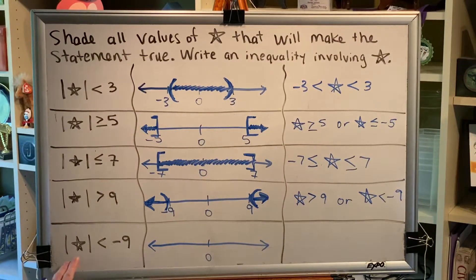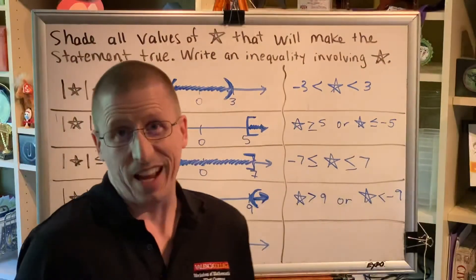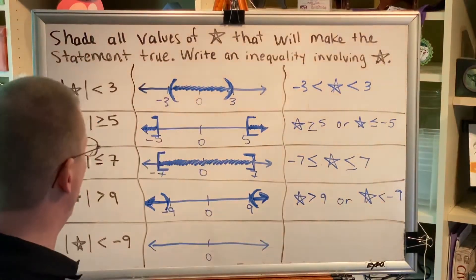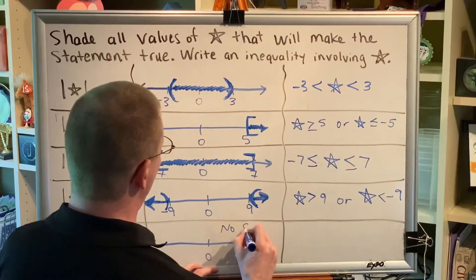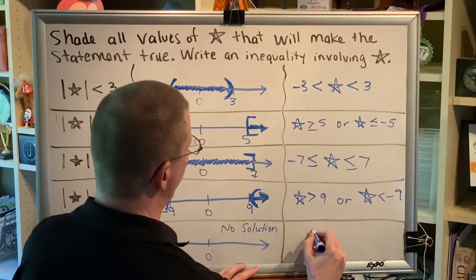The last one was the tricky one. Distance less than a negative. Well, if the distance is less than a negative, then that means it's negative, and a distance cannot be negative. So this has no solution. There is nothing to graph on the number line. And there is no inequality.